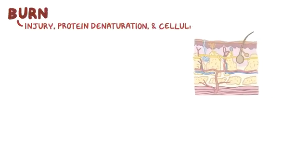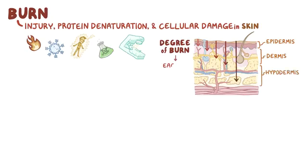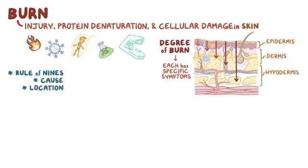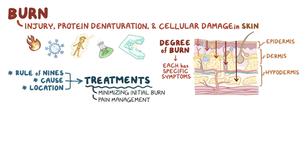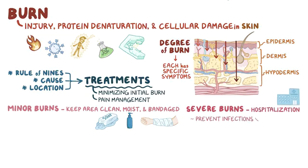To recap, a burn is injury, protein denaturation, and cellular damage that occurs in the skin caused by extreme heat or cold, electricity, some chemicals, or radiation. The degree of burn is determined by whether the epidermis, dermis, or hypodermis are affected, and each degree has specific symptoms. The rule of nines, the cause of the burn, and location of the burn can help determine treatments. In general, treatments include minimizing the initial burn and pain management. Minor burns don't typically require treatment beyond keeping the area clean, moist, and bandaged. But severe burns may require more extensive medical intervention, particularly hospitalization at specialized burn centers, to prevent infections and dehydration.